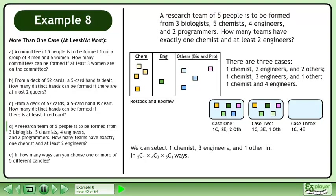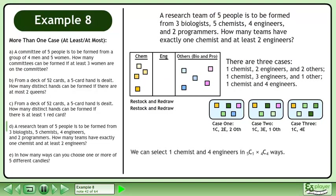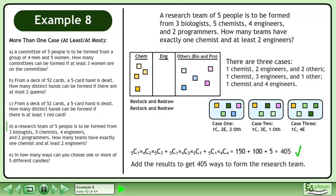We can select 1 chemist, 3 engineers, and 1 other in 5 choose 1 times 4 choose 3 times 5 choose 1 ways. We can select 1 chemist and 4 engineers in 5 choose 1 times 4 choose 4 ways. Add the results to get 405 ways to form the research team.